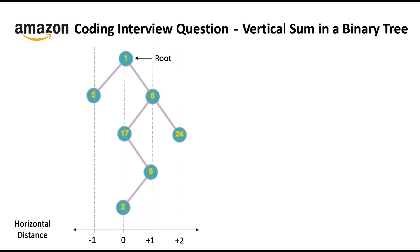Now you might be wondering how to find out the horizontal distance of a particular node. Let's consider the horizontal distance of the root node to be 0. Now if you move towards the left node, the horizontal distance will be minus 1 of the current horizontal distance. And if you move towards the right node, the horizontal distance will be plus 1 of the current horizontal distance.